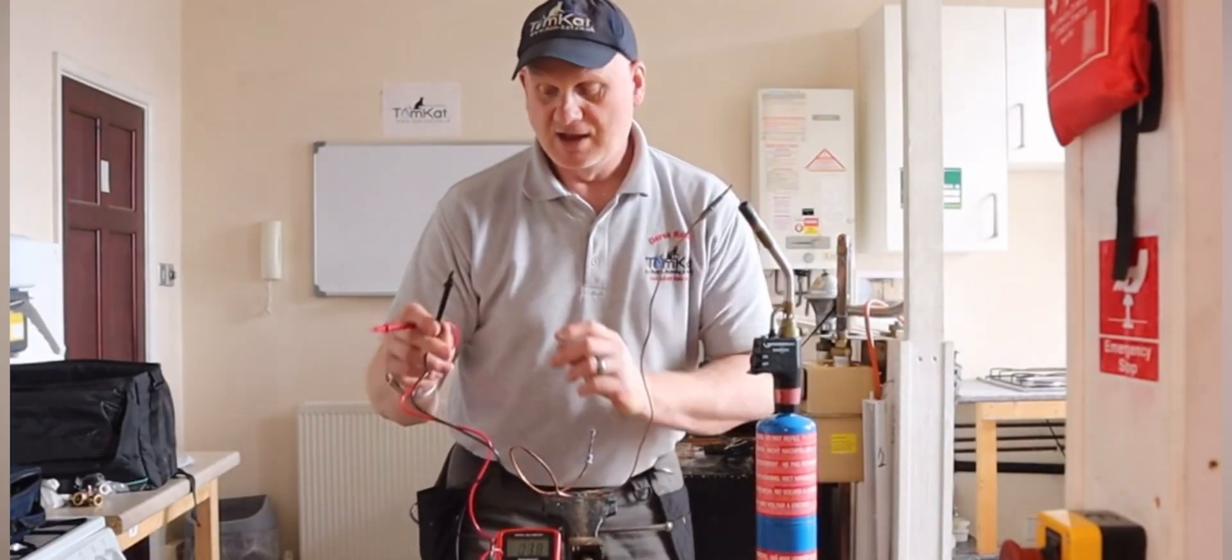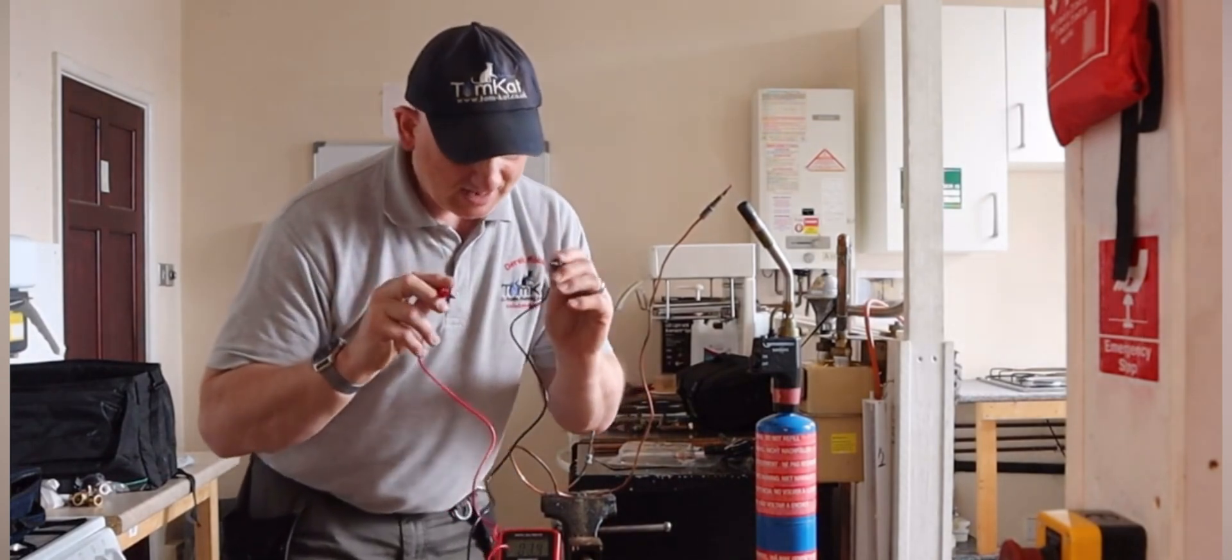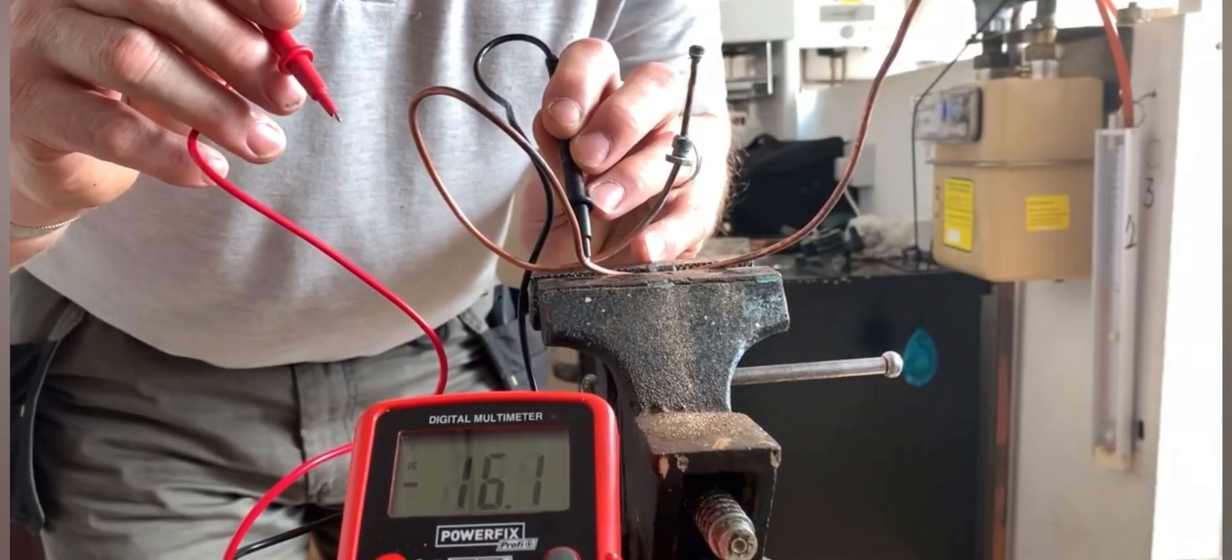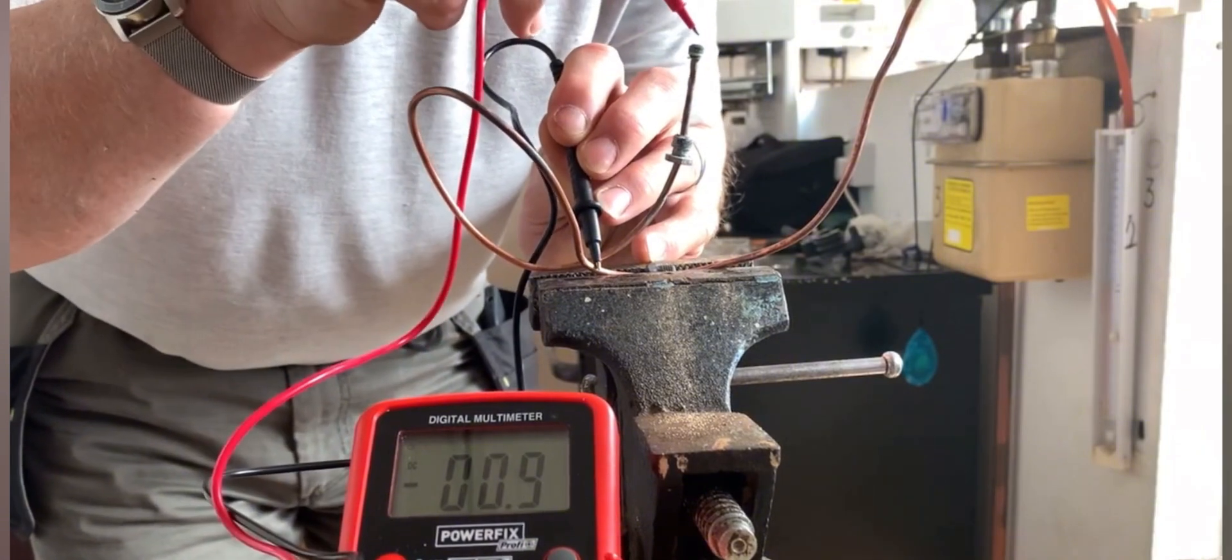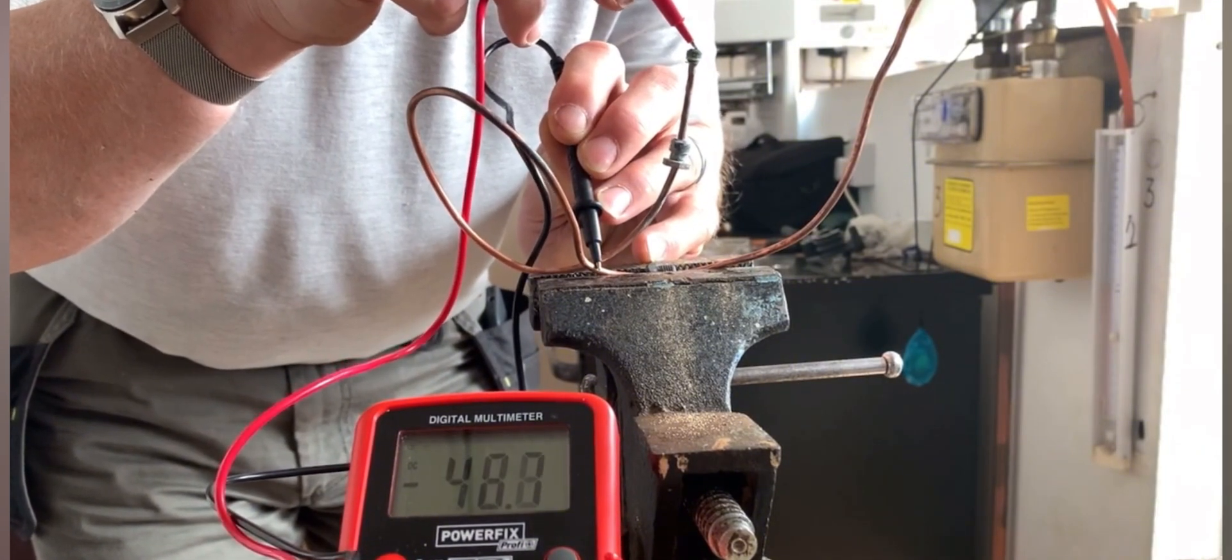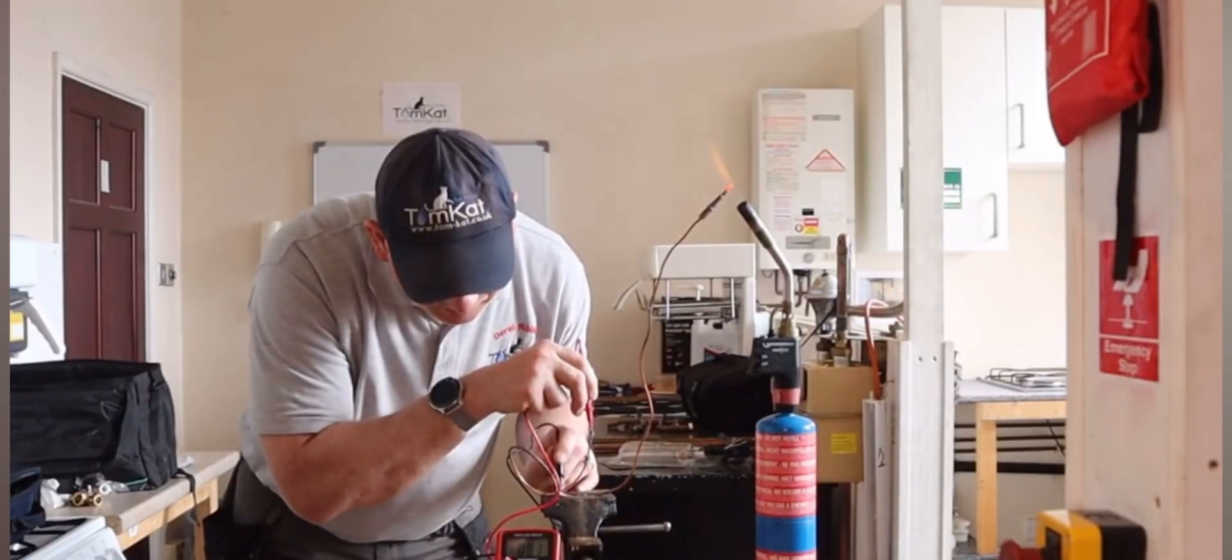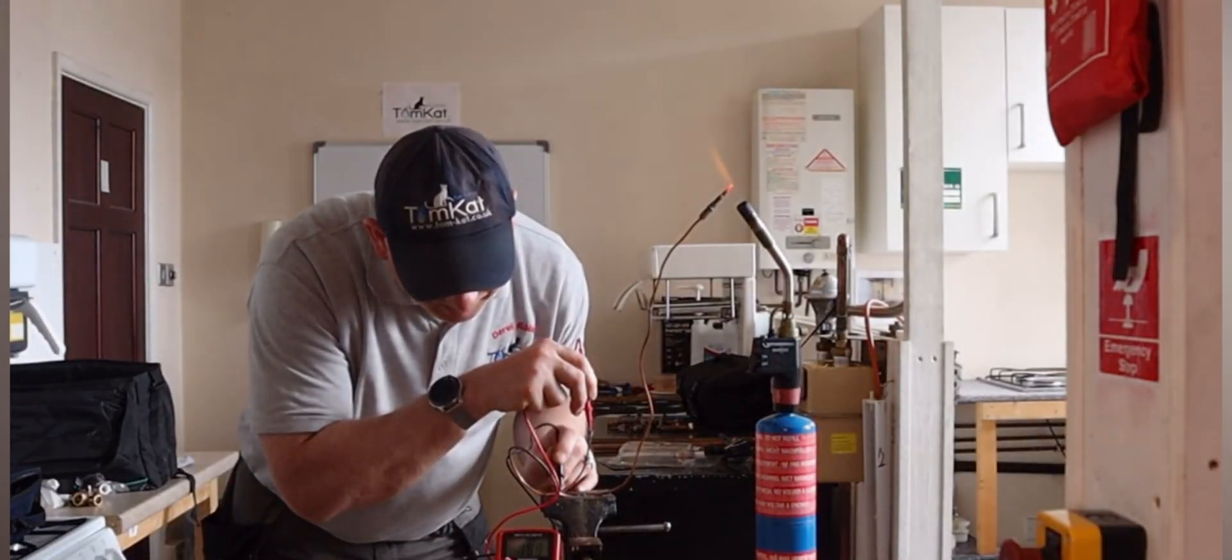Just into the flame. And then I get my black lead and I put that onto the copper somewhere. So I'll put it on the copper, and then I use my red onto the end of there, and I should be getting a millivolt reading. So getting 18.